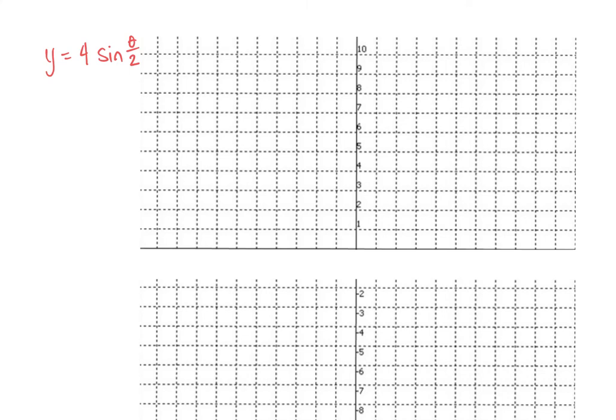Technically, when I have something like this, the π over 2 can be written as 1 half θ, or not π over 2, θ over 2. So you could say 4 sine of 1 half θ, where you can see that it actually is a coefficient there.